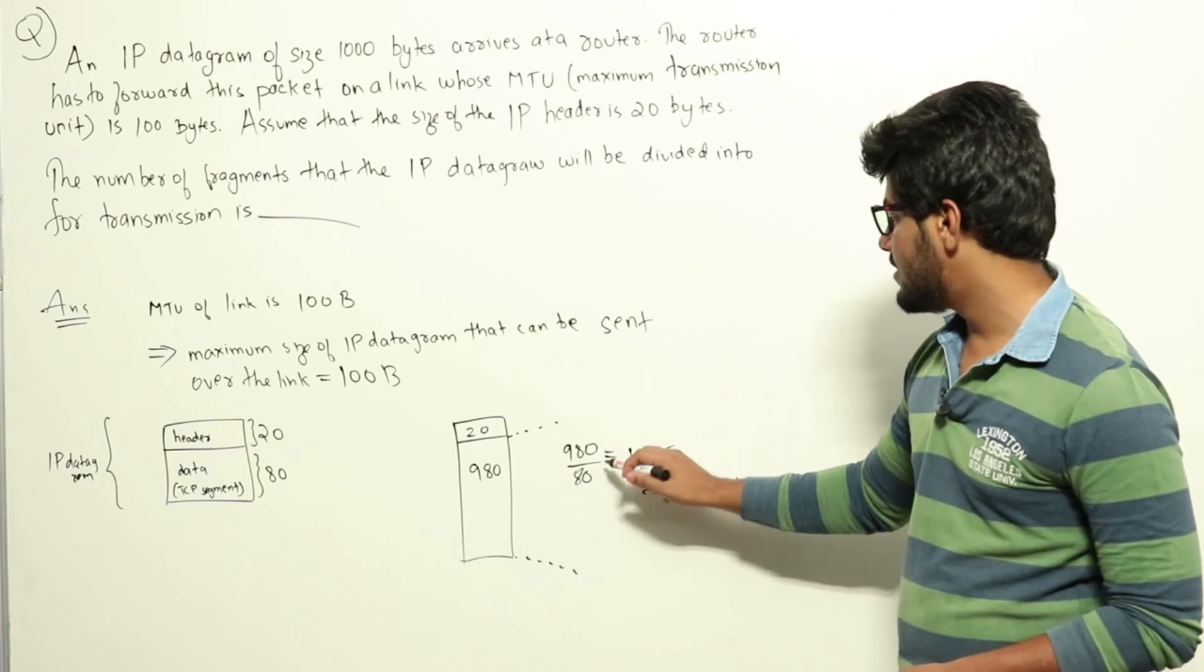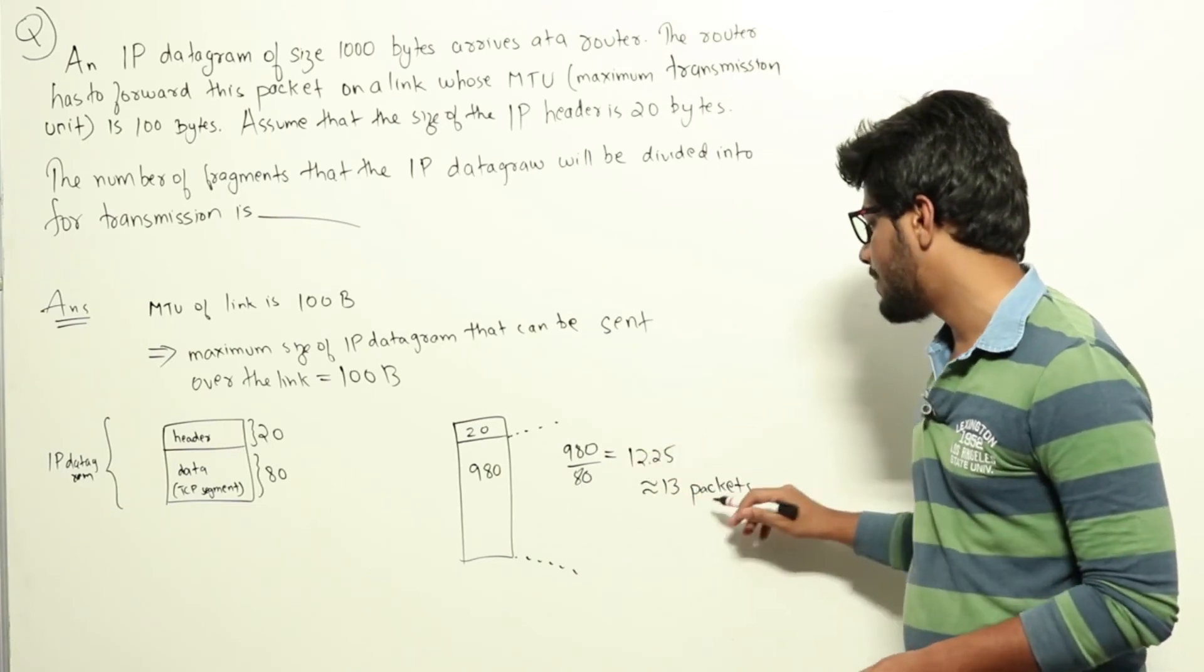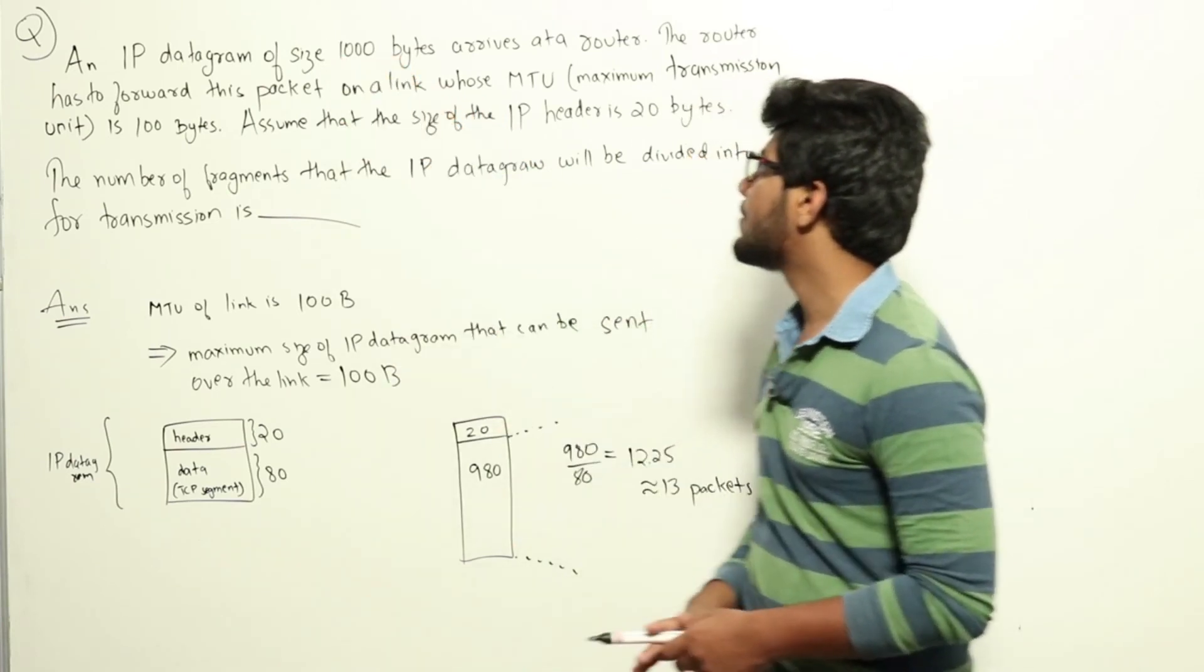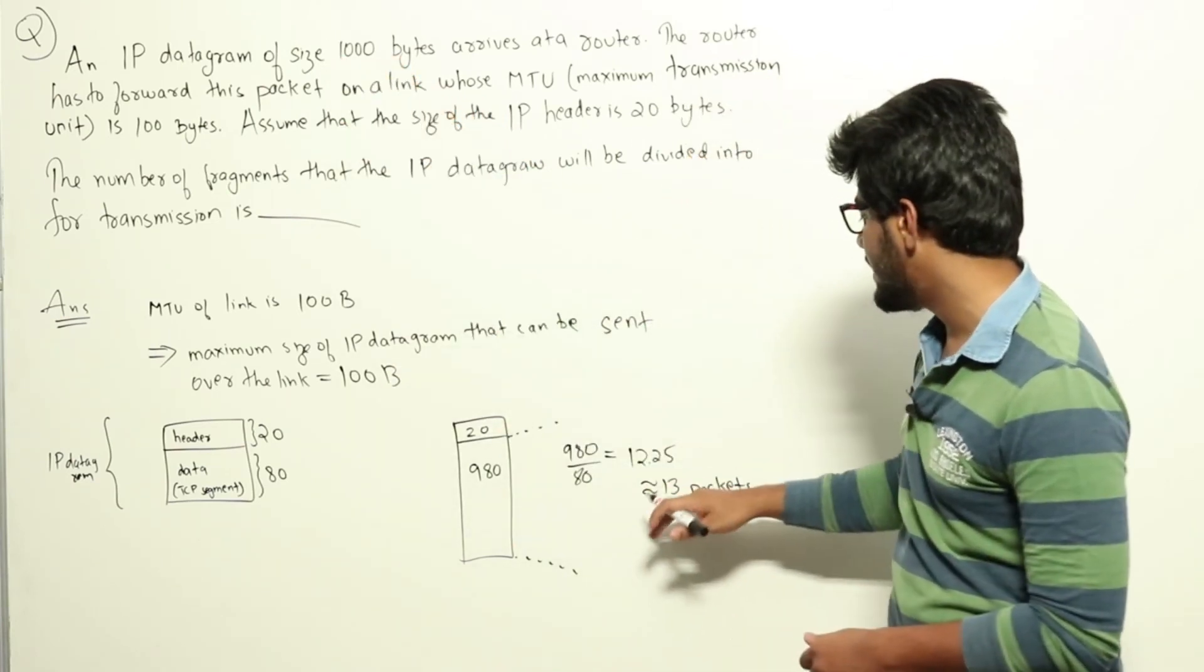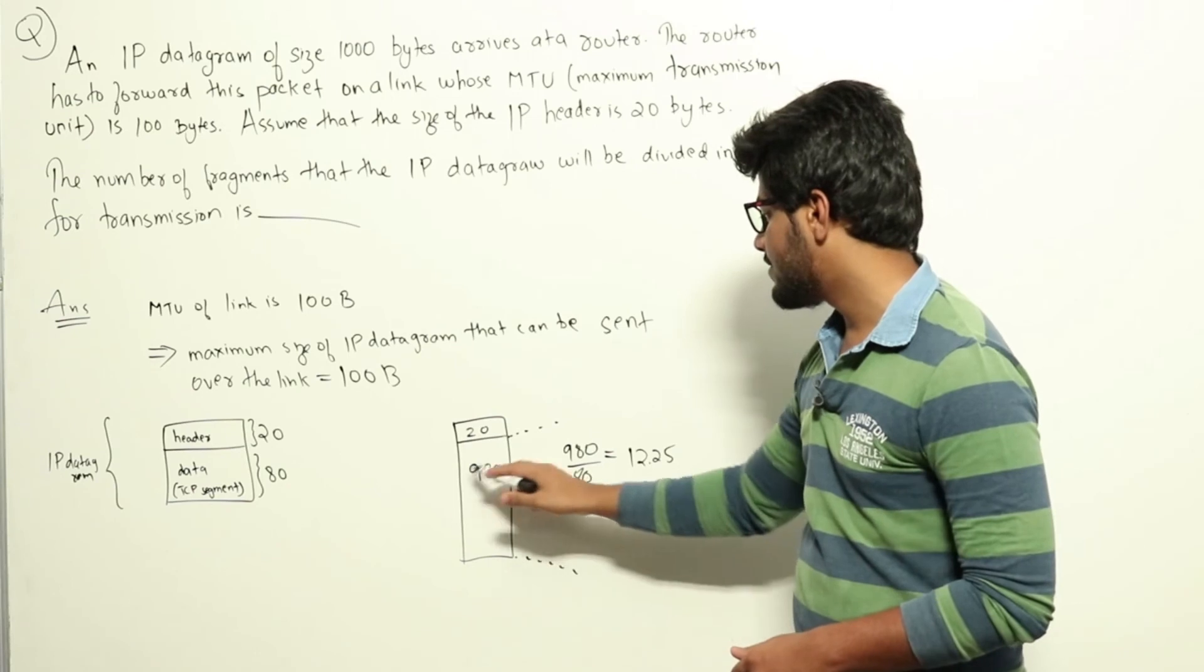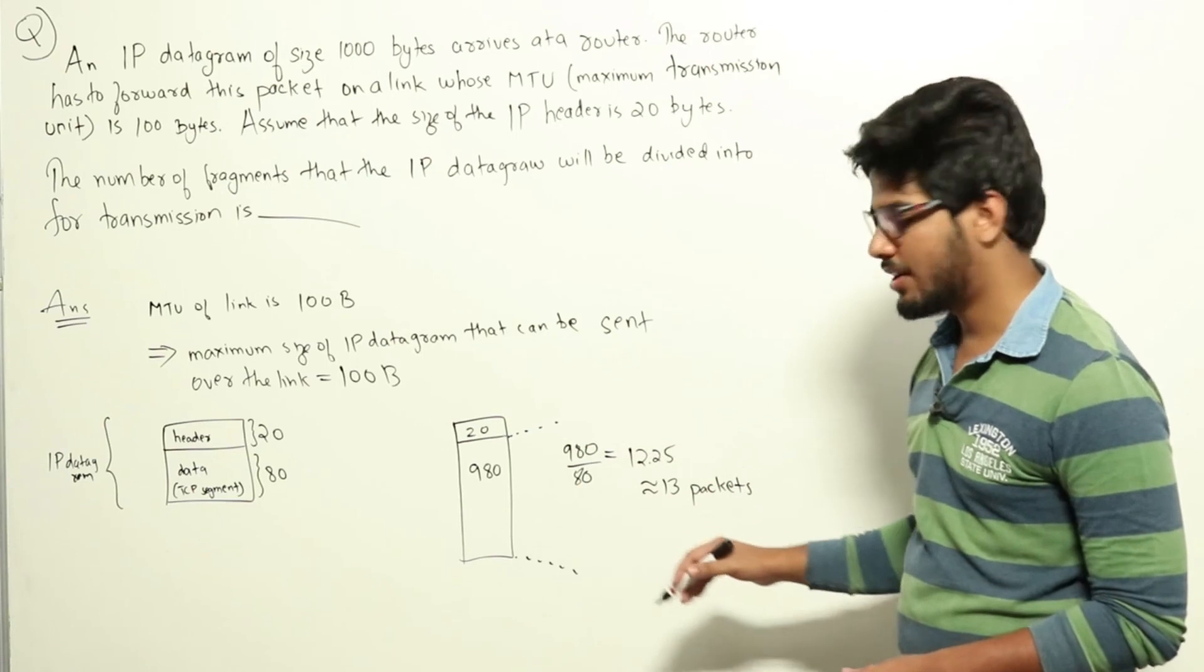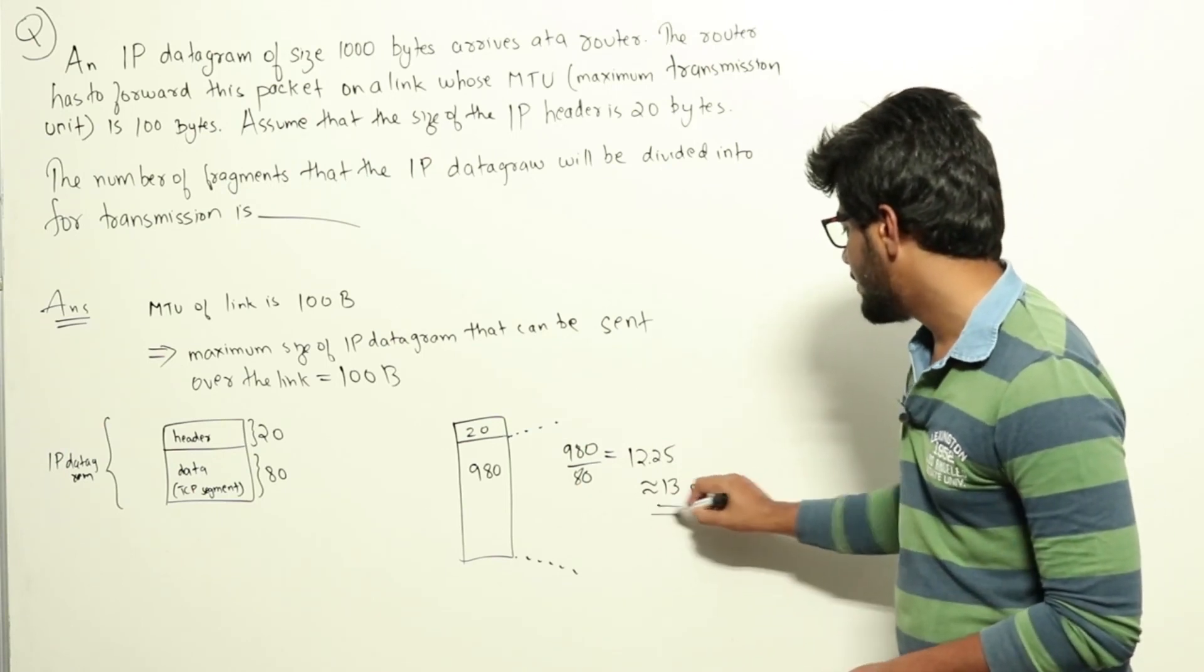Which we can do as 980 by 80 is 12.25, that means 13 packets. So we need to divide this packet of size 1000 into 13 packets. The first 12 will have a data part of 80 plus a header of 20. The last one will have the remaining data part and a header of 20. So the answer is 13 packets.